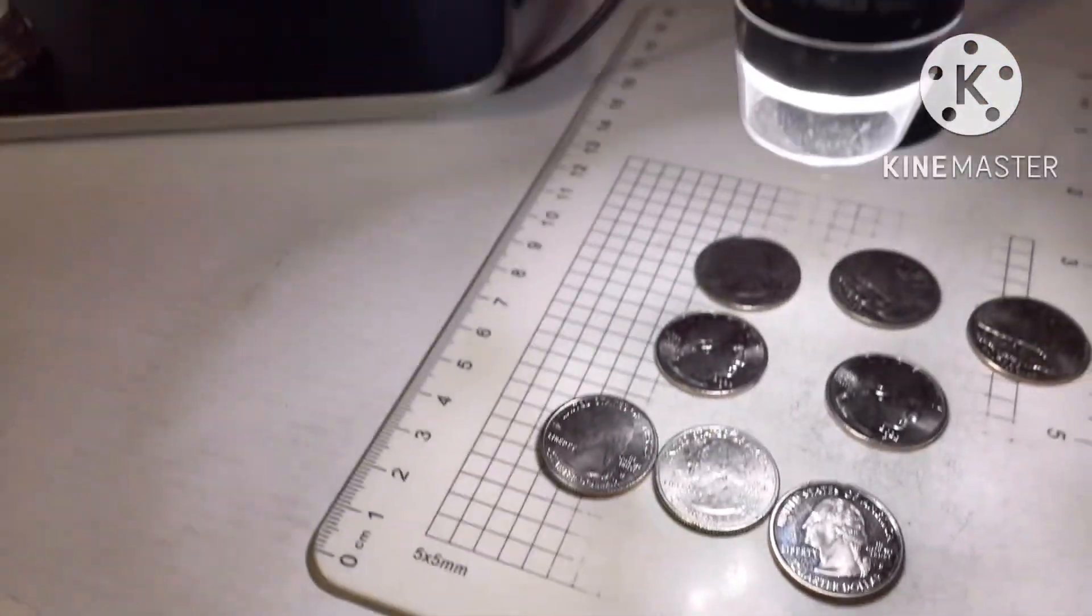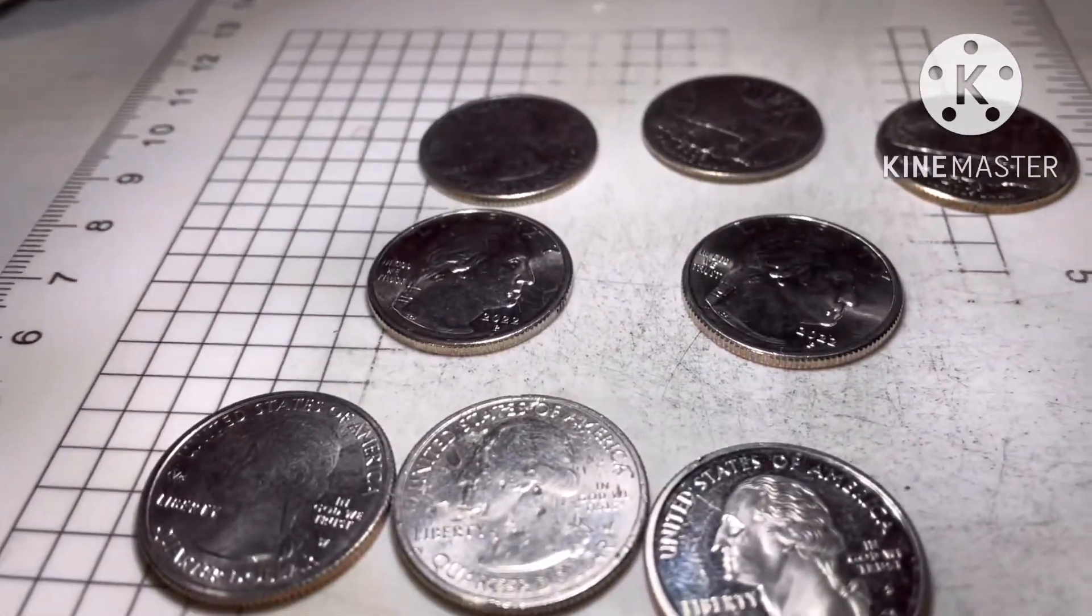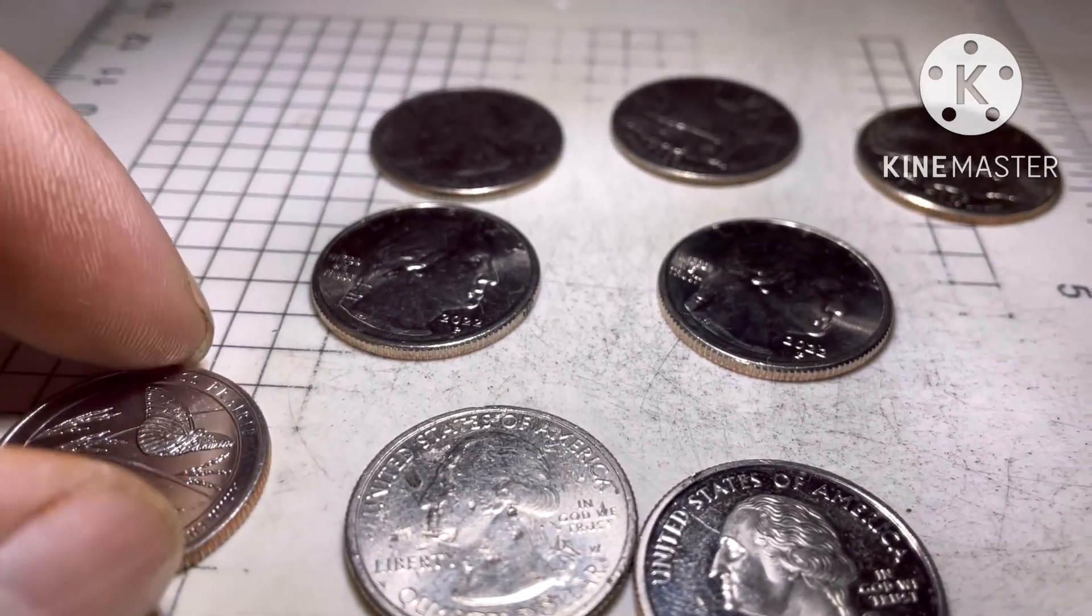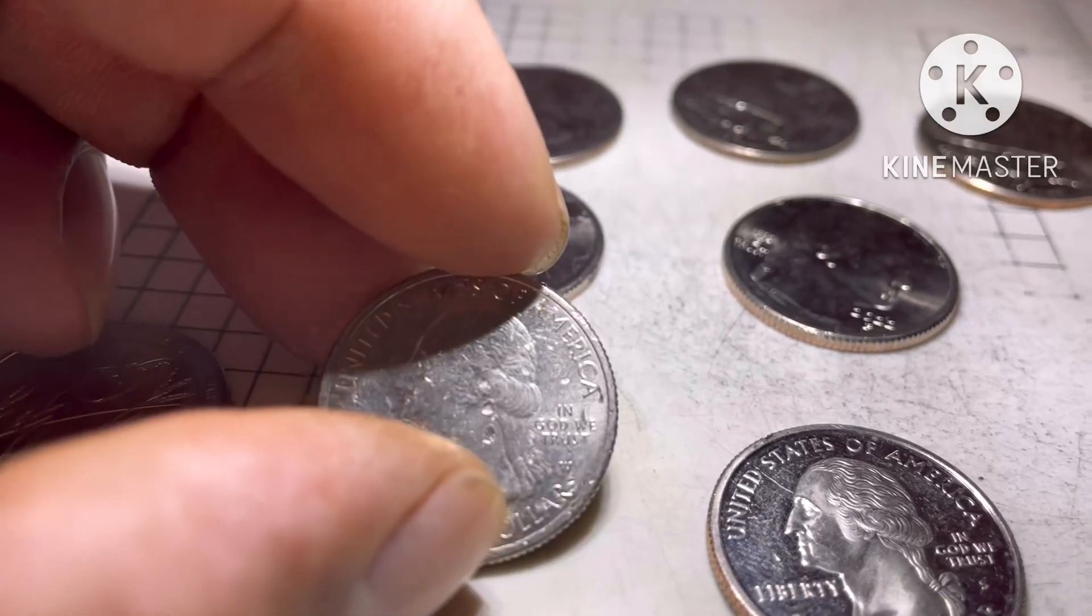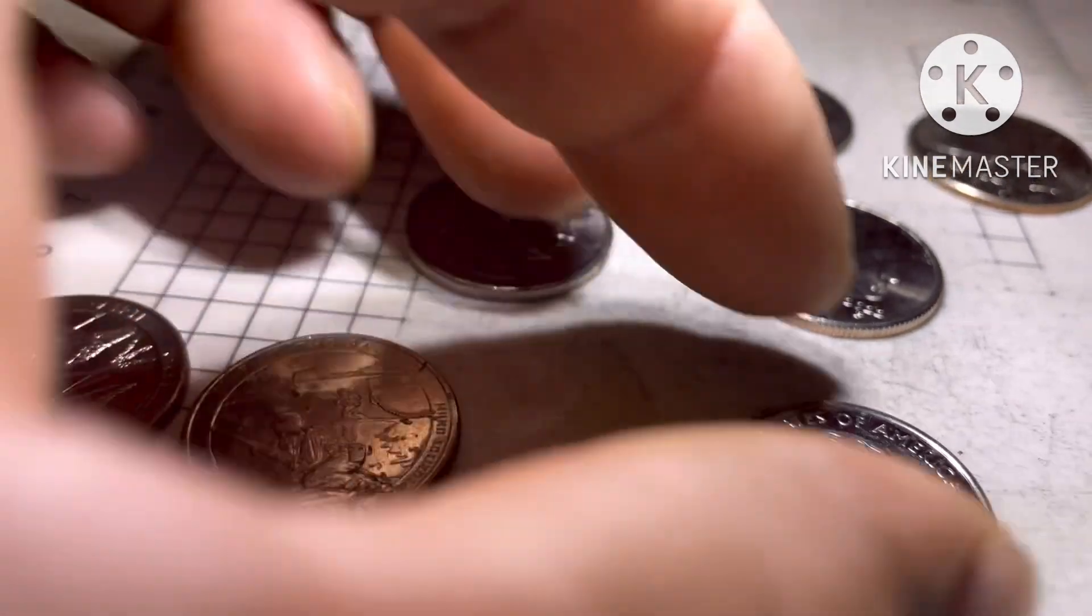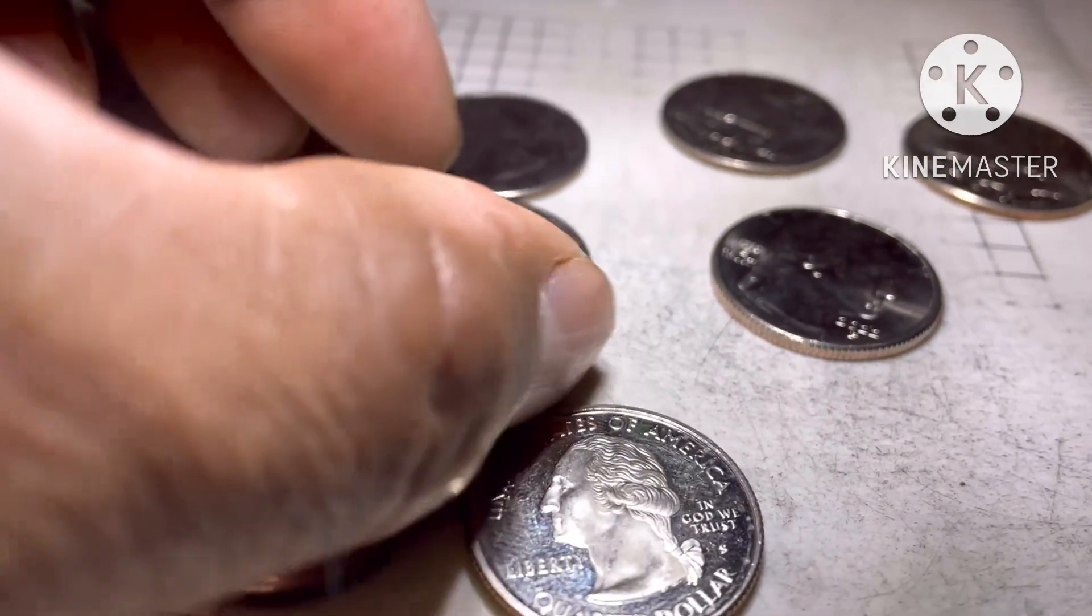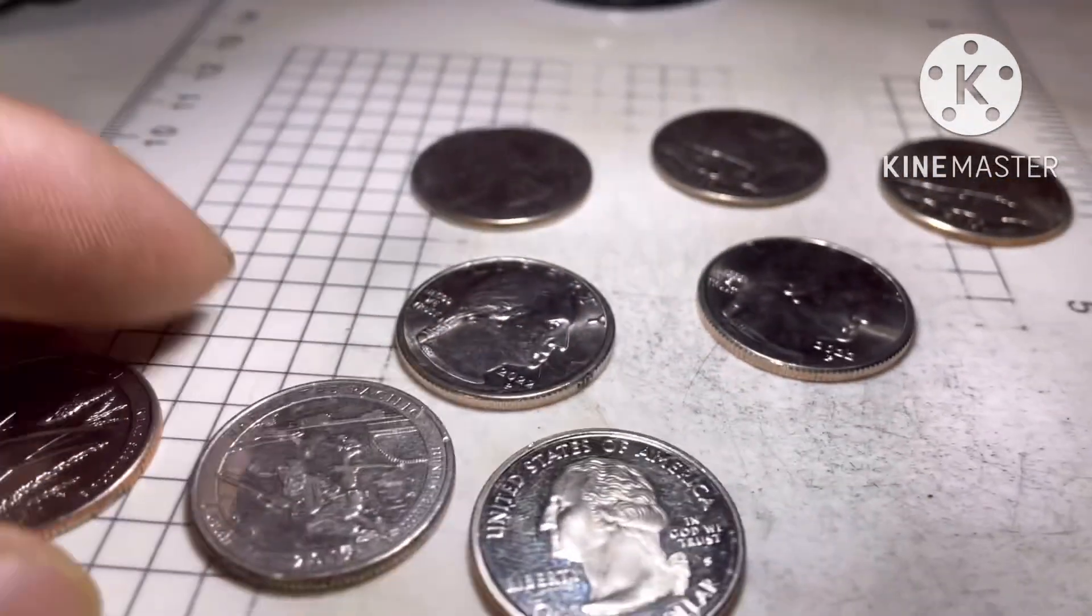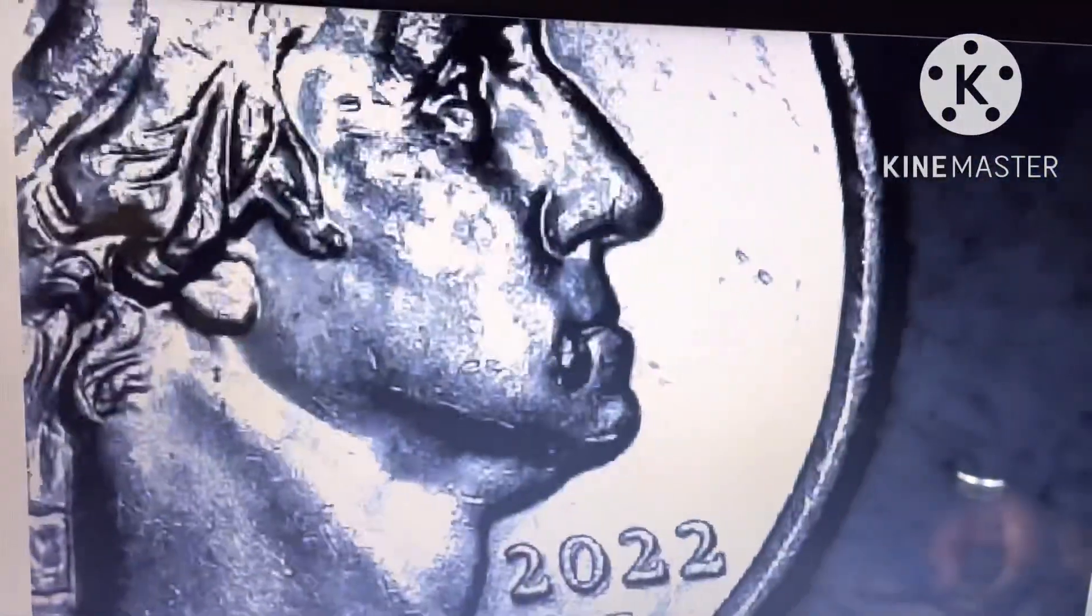All right guys, this is all the finds. 2020 W Tallgrass, press. 2019 War in the Pacific, proof. This, that chip. I'm gonna show you the microscope. You can see that. Mouth. Two of those.